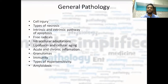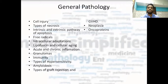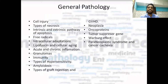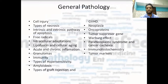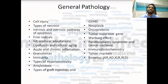And amyloidosis — which type of amyloidosis is seen in which disease — is important. Types of graft rejection and graft-versus-host disease are important. Neoplasia as a whole topic: you should know all oncoproteins, tumor suppressor genes, the Warburg effect, which is a complication of cancer, paraneoplastic syndrome, and cancer cachexia. All IHC — immunohistochemistry — markers and tumor markers are also important. In genetics, you should at least know the table for autosomal recessive, autosomal dominant, X-linked recessive, and X-linked dominant.